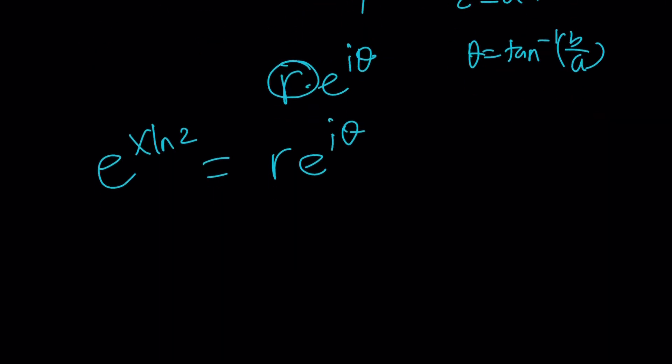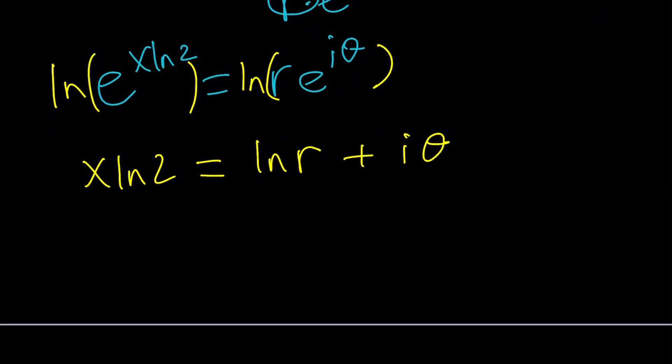So the idea is, once you get something like e to the x ln 2 equals r e to the i theta, you're going to ln both sides one more time. That's going to bring the powers, and you'll be able to solve for x. Assuming we know r and theta, that's going to be super complicated. x ln 2 equals ln r plus i theta.